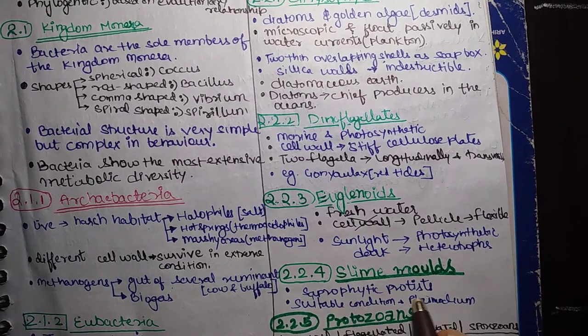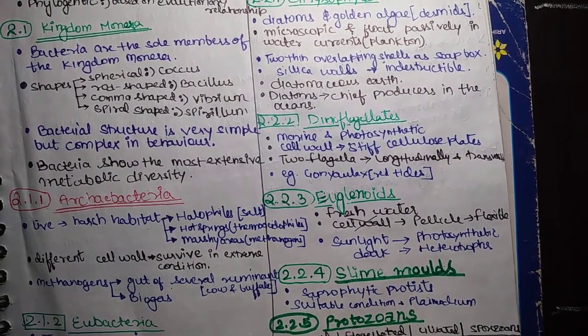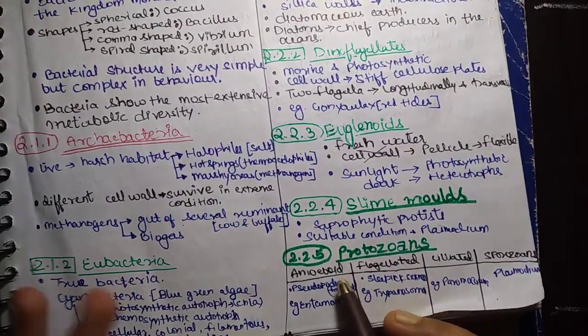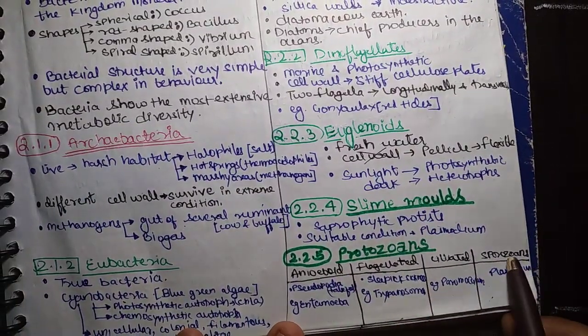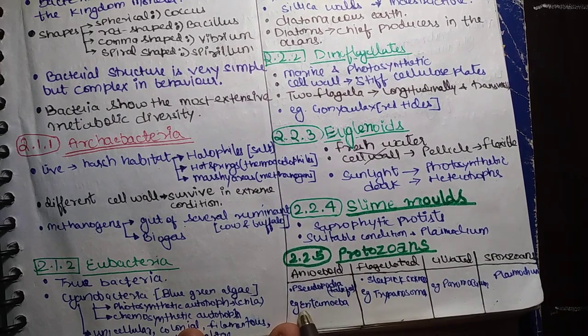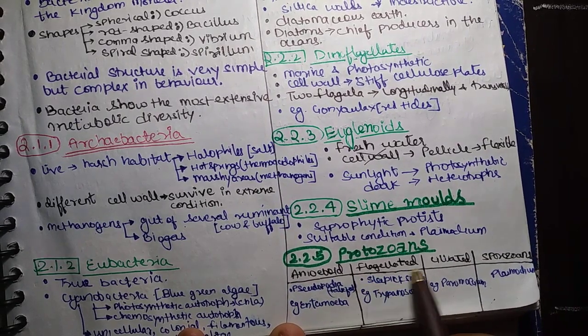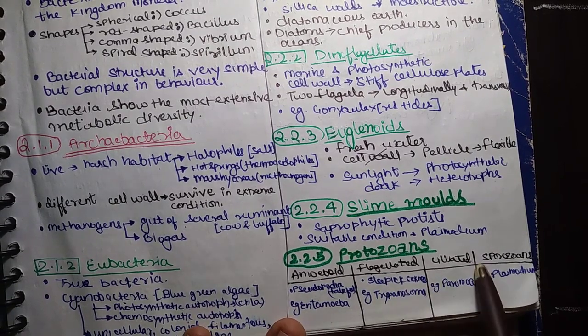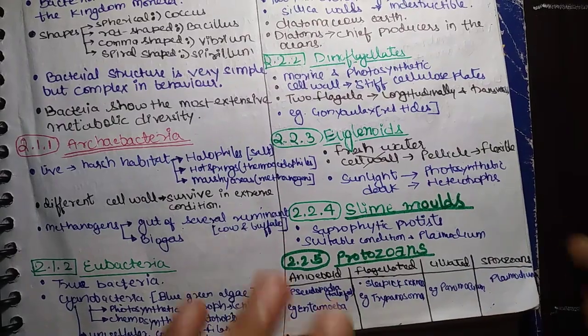Slime molds. These are saprophytic protists. In suitable condition, plasmodium forms. Protozoans. Protozoans are different. Like Amoeboid, Flagellated, Ciliated, Sporozoans. Amoeboid, Pseudopodia, False Feet, Entamoeba. Flagellated, sleeping sickness causes. Trypanosoma. Ciliated, Paramecium. Sporozoans, Plasmodium.